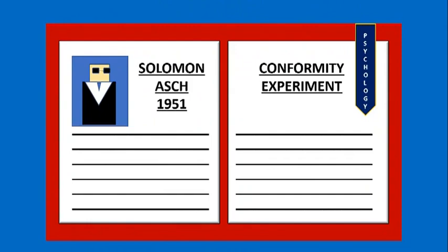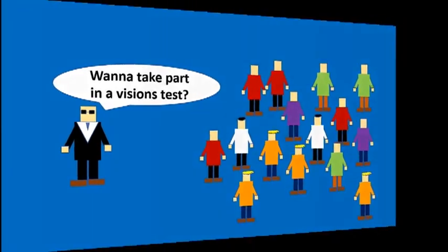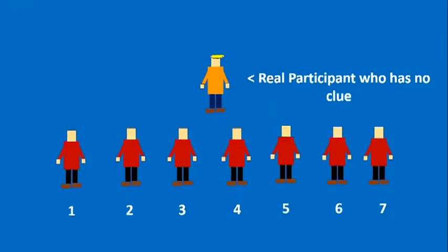Well, to conduct this experiment, Solomon Asch employed 50 male college students and asked if they wanted to participate in a vision test. The design of the experiment was very simple yet very ingenious.